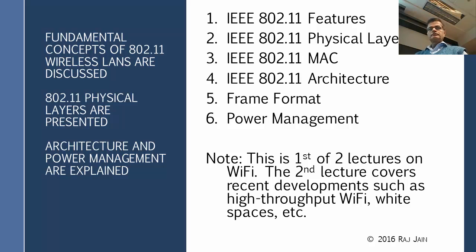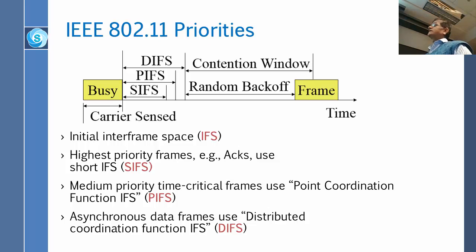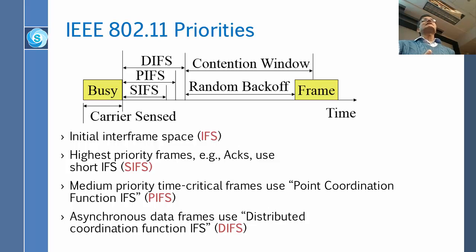The access method in 802.11 is called DCF. They have three different inter-frame spacings between frames. The shortest is SIFS, the medium one is PIFS, and the long one is DIFS — the distributed coordination function. The shortest spacing, SIFS, is used when you want to send something very critical. The three most critical things sent at SIFS are RTS (request to send), CTS, and ACK.